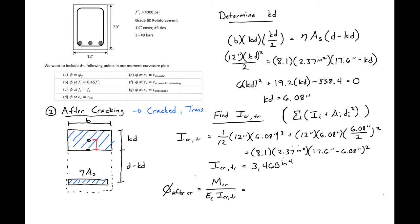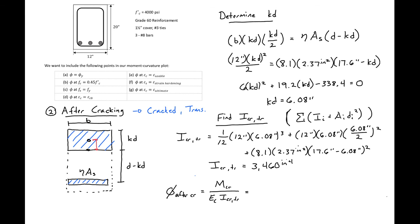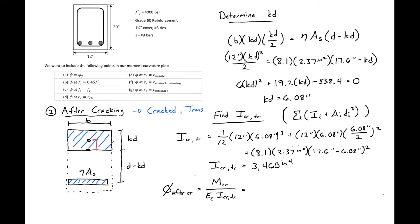Finally, we can find our after-cracking curvature. We'll do that using our curvature equals M over EI. Our M in this case is our M cracking, which we found in our previous video, to be 444.1 kip inches.